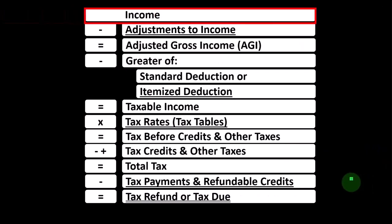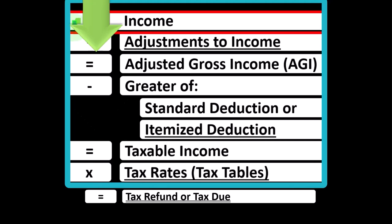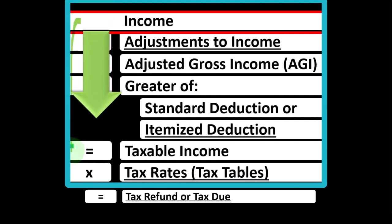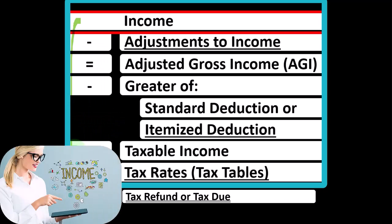Looking at the income tax formula, we're focused on line one income. Remember, the first half of the income tax formula is, in essence, a funny income statement. Normally, an income statement has income minus expenses resulting in net income. Here, we have income minus various deductions resulting in taxable income.